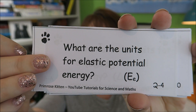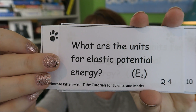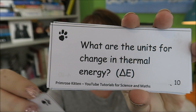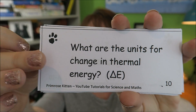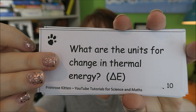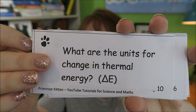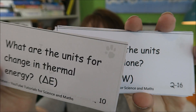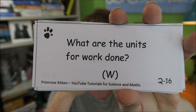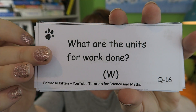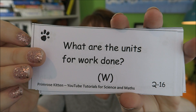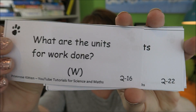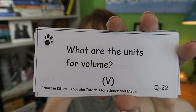What are the units for elastic potential energy? Elastic potential energy is measured in joules. What are the units for change in thermal energy? Thermal energy is, again, energy — it's measured in joules. What are the units for work done? Work done is another form of energy, it's measured in joules.